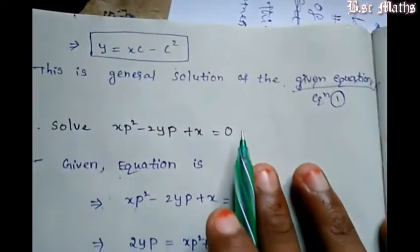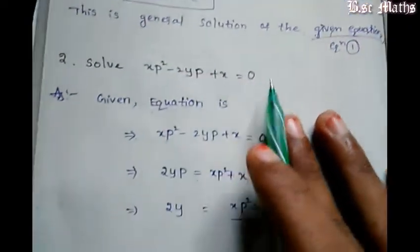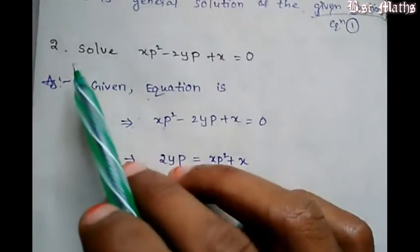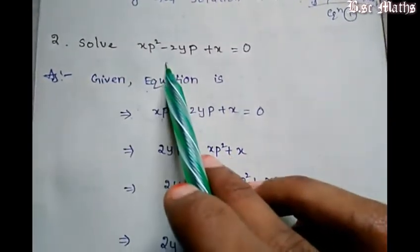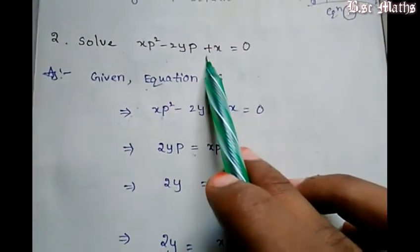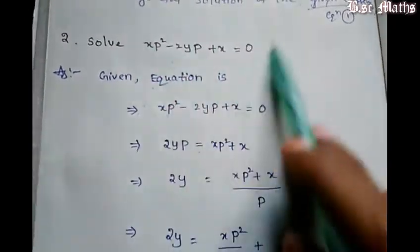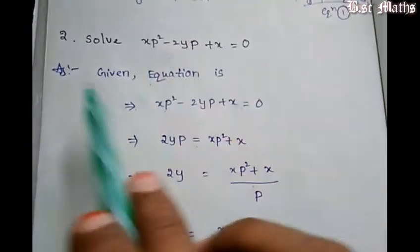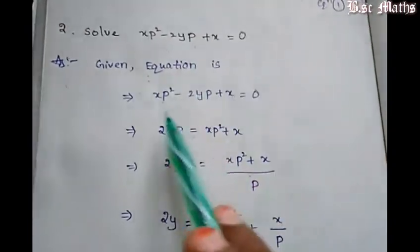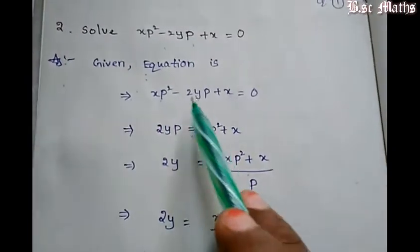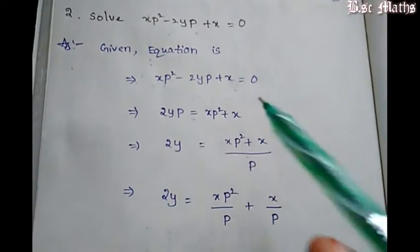This is the general solution of the given equation. This is the salve. Next, the second problem: solve xp squared minus 2yp plus x equals 0.